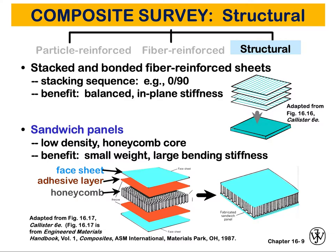The other type, which is the subject of a lot of current research, is sandwich panels. They are low in density and feature a honeycomb core — different structures like honeycomb cells. The benefit is small weight combined with large bending stiffnesses. You can see that they consist of sheets, adhesive layers, and a honeycomb core. There is a lot of design and engineering involved, but also a lot of testing needs to be done because many properties depend on the geometry, and as we create new geometries, extensive testing is required.